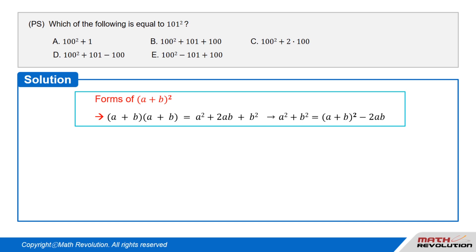Solution. Forms of (a + b)². (a + b)² equals (a + b) times (a + b), which equals a² + 2ab + b². And a² + b² equals